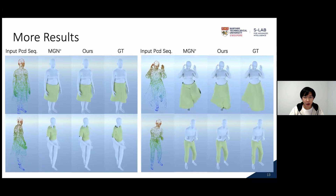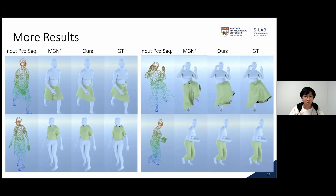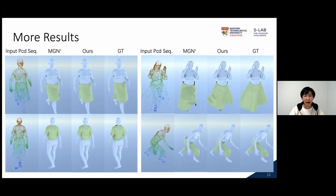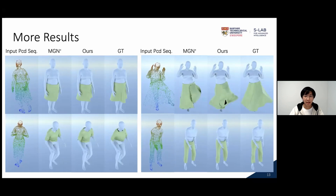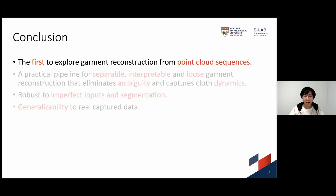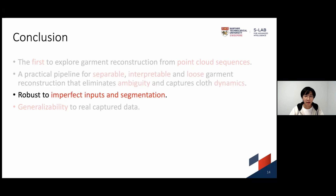Here, we provide some qualitative reconstruction results. We can easily notice that the results of MGN suffer from severe artifacts on loose garments like skirts. Also, our Garment 4D can capture better garment dynamics. More qualitative results can be found in the supplementary material. In conclusion, to the best of our knowledge, we are the first to explore garment reconstruction from point cloud sequences. Garment 4D provides a practical pipeline for separable, interpretable, and loose garment reconstruction that eliminates ambiguity and captures garment dynamics. Extensive experiments show that our method is robust to imperfect inputs and segmentation, and Garment 4D can generalize well to real captured data. Thank you for listening.